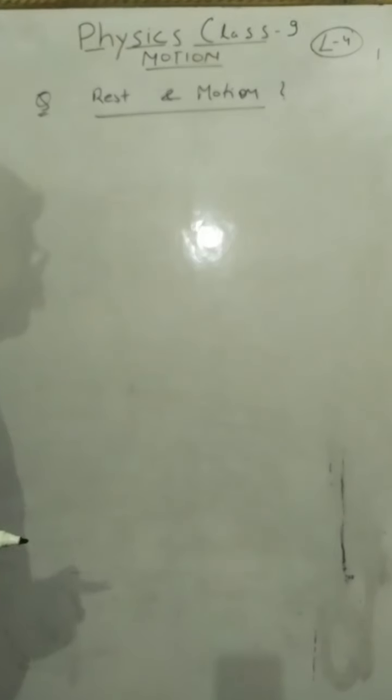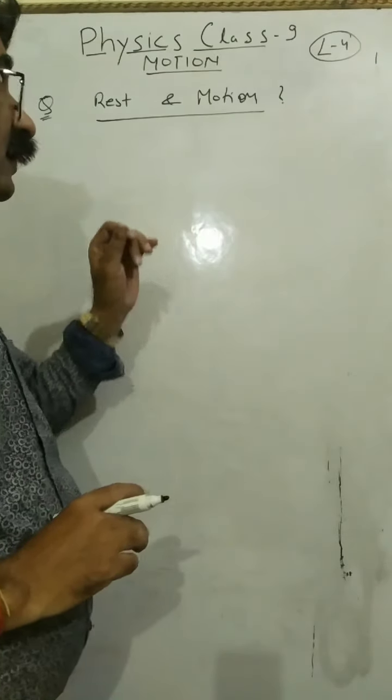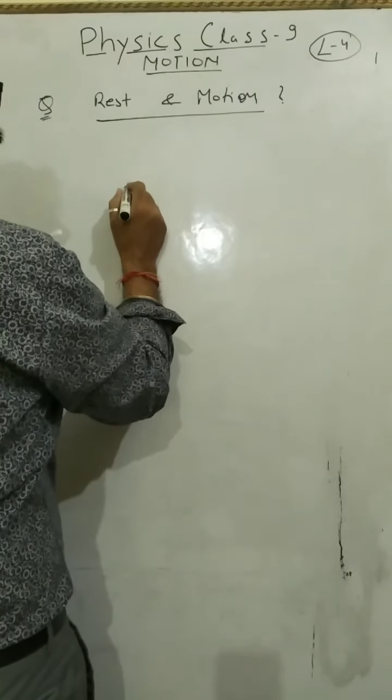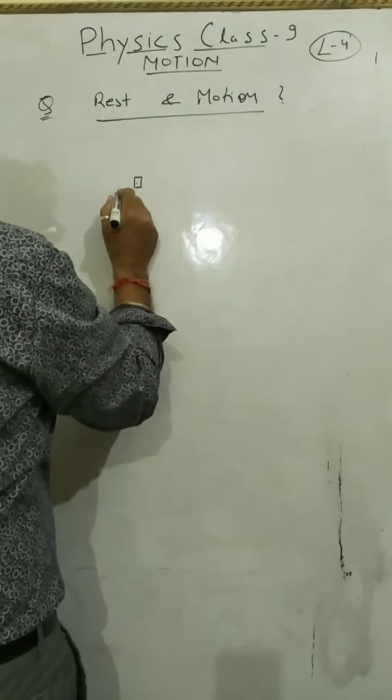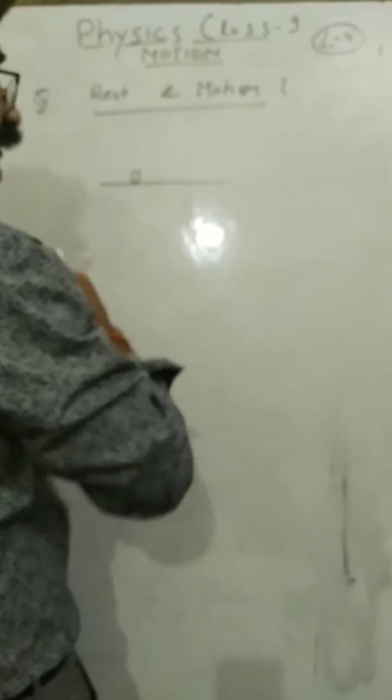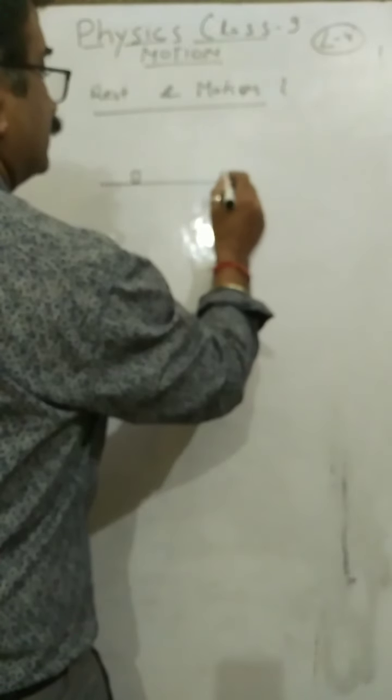Sometimes you have a question like that, what is rest and motion? Simply you say when any object which does not change its position, we say it is in rest. But if it changes its position, then you say it is in motion.